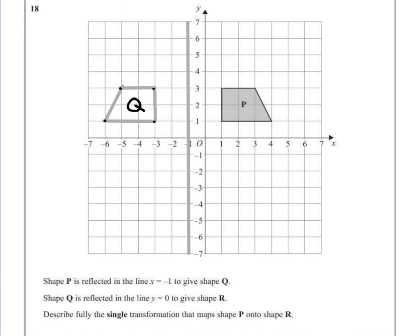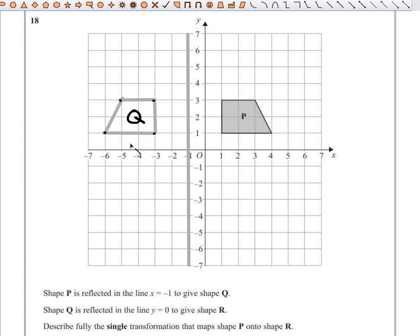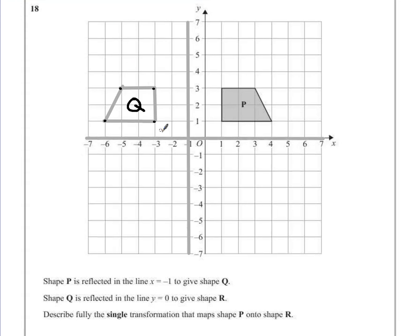The next step was to reflect this new shape on the line y equals 0, which is basically our x-axis. All the points along there, y equals 0. So if we reflect Q, it turns upside down and is one square under the line instead of one square over the line.